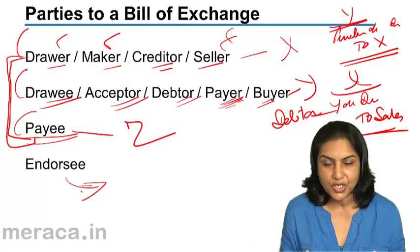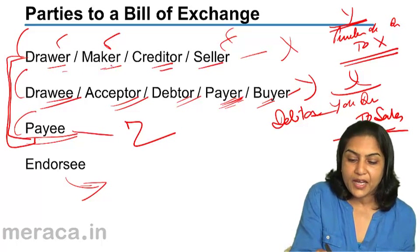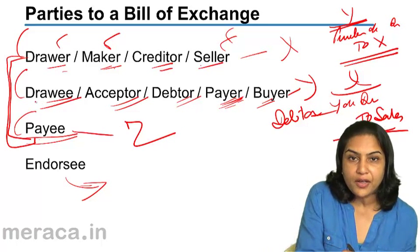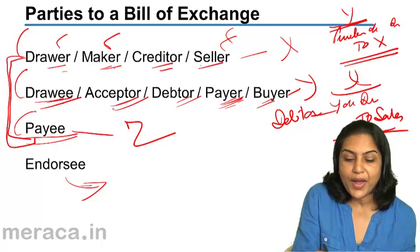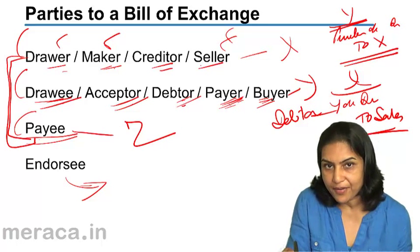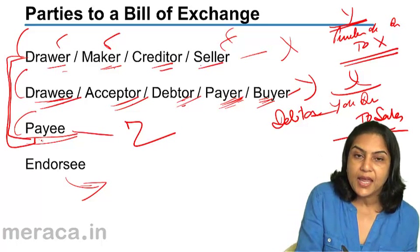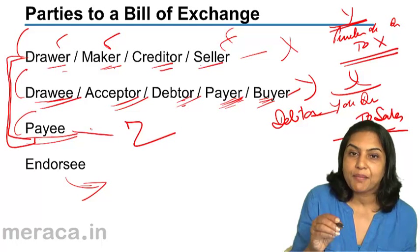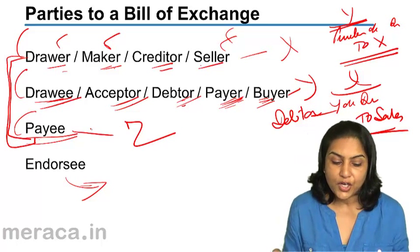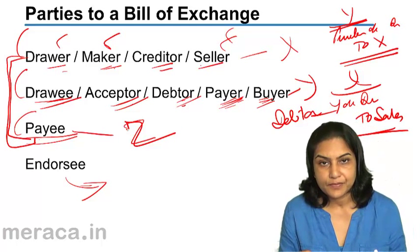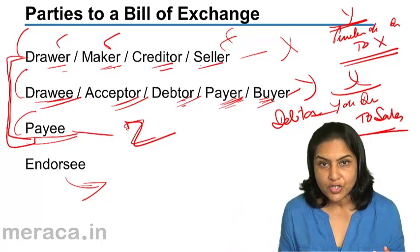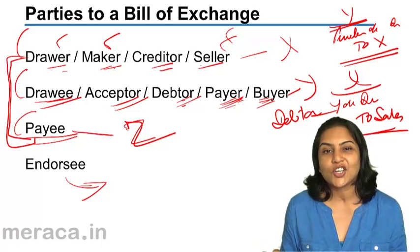The parties to a bill of exchange could be three. The drawer is the maker of the bill — the person who sold the goods and is therefore the creditor. The bill is drawn on Y, who is the drawee; he accepts the bill, has bought the goods, is the debtor, and has to make the payment — he is the payer. It is possible that the payee is a different person, since a bill can be made payable to another person, not necessarily the person making the bill. After a bill of exchange is made, if it is transferred or endorsed to somebody else, that's an act of endorsement, and the person to whom it is endorsed is called the endorsee.